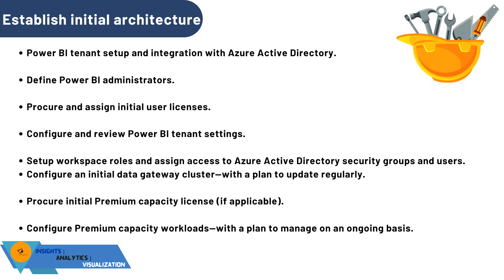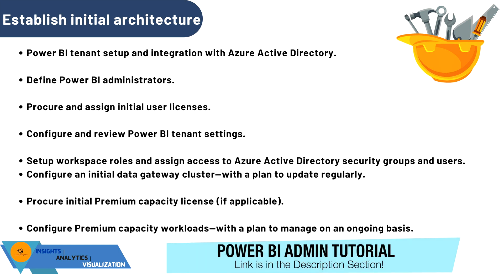Establishing the initial architecture involves several steps. First, set up the Power BI tenant and integrate with Azure Active Directory for proper authorization. Define Power BI administrators who will handle different admin aspects. Procure and assign initial user licenses, which are required when publishing content on Power BI service and sharing with user groups. Configure and review Power BI tenant settings — check out our Power BI Admin Tutorial series on YouTube for guidance.